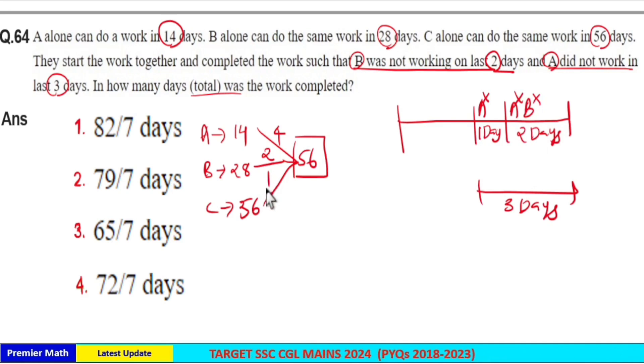C can complete 1 unit in 1 day means in 2 days C completed 2 units. And in the 3rd last day B and C worked so B and C can complete 2 plus 1, 3 units in 1 day. So last 3rd day B and C completed 3 units.